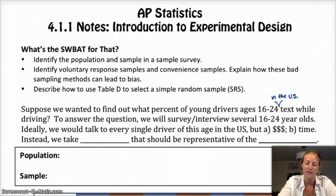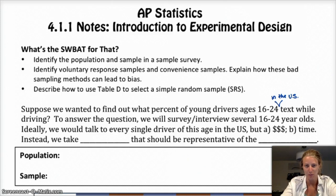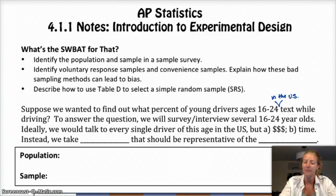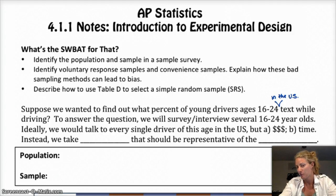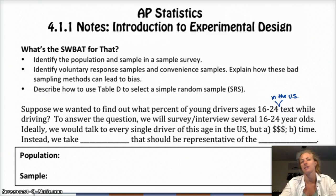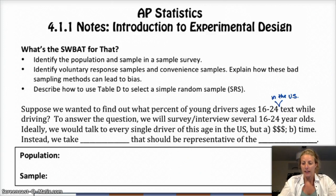Suppose we wanted to find out what percent of young drivers ages 16 to 24 in the United States text while they're driving. To answer this question, we can survey or interview several 16 to 24 year olds. Ideally, you really want to talk to every single person in the United States who's within that age group and drives. But realistically, that doesn't work because it costs a lot of money and takes a lot of time. So instead, we take a sample that should be representative of the population we're interested in.